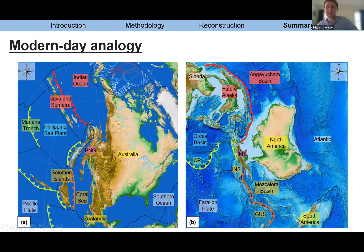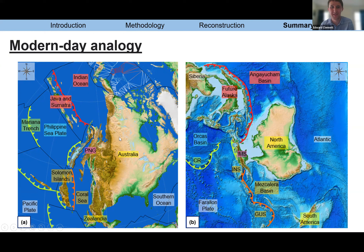Even though this looks complex, it's perfectly plausible because it's strikingly analogous to the present-day Southwest Pacific. This image — flipped and rotated, which messed with Australian audiences' brains — allows you to compare directly with the Cretaceous and late Jurassic North America setting. North America is very analogous to Australia, a large continent gradually overriding an archipelago. There's a subduction polarity flip from westward to eastward, similar to present-day Papua New Guinea, and oceanic subduction beneath Indonesia, the Solomon Islands, and Fiji. The Orcus plate is analogous to the Philippine plate.